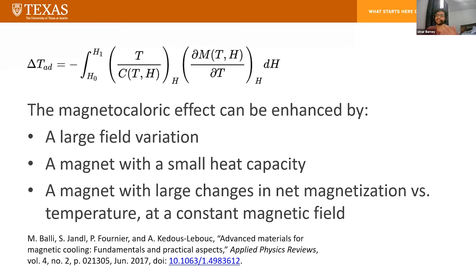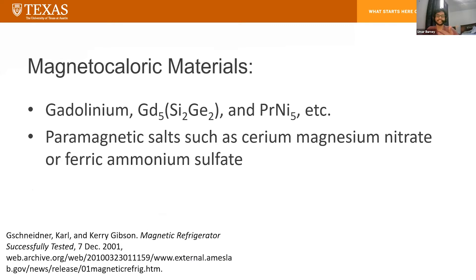Some examples of magnetocaloric materials include gadolinium and many of its alloys — this element in particular seems to have very good magnetocaloric effects. There are many other alloys with strong magnetocaloric effects, and a lot of these are found experimentally. Additionally, you can use paramagnetic salts, such as cerium magnesium nitrate or ferric ammonium sulfate. The salt just has to be paramagnetic, and they all have very strong magnetocaloric effects.